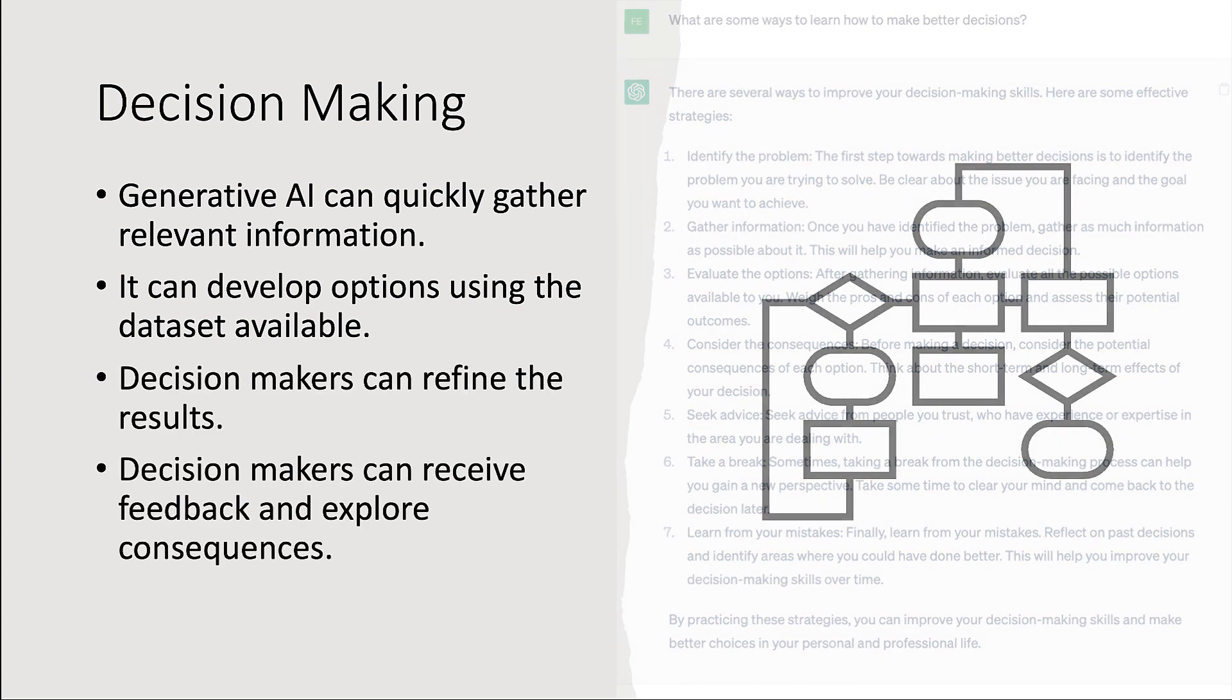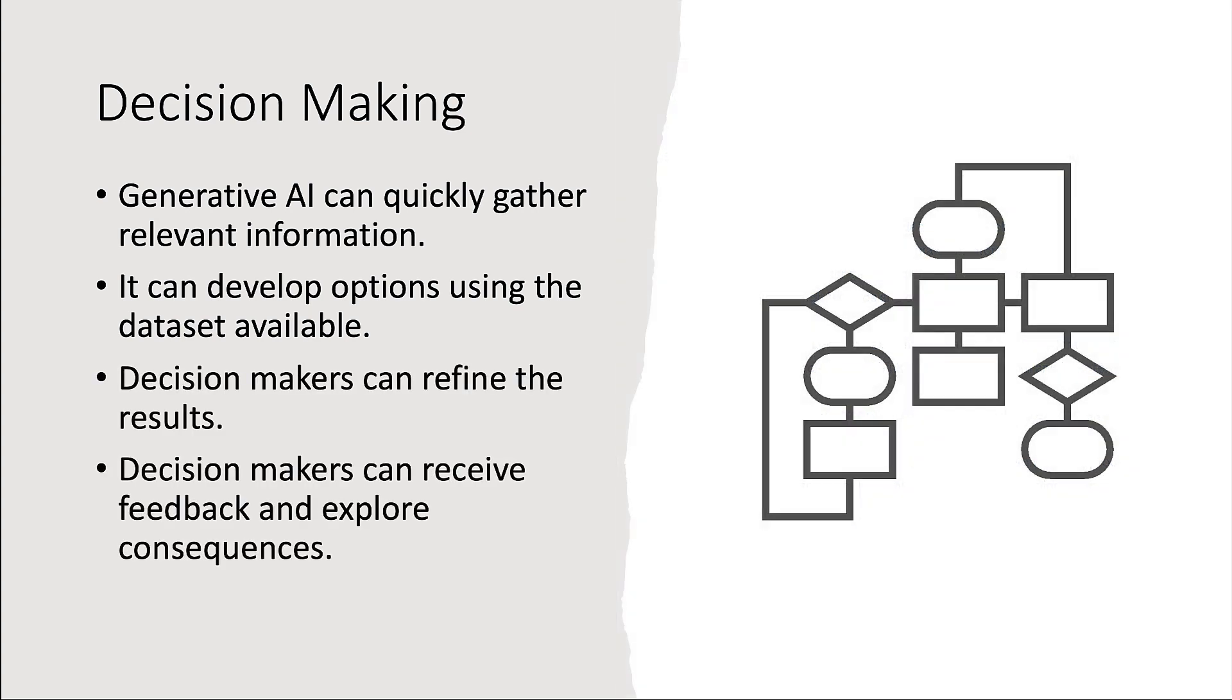With language models like ChatGPT, decision makers can ask additional or follow-up questions in order to refine the results. Decision makers can use the AI to seek feedback and explore consequences of the various options.